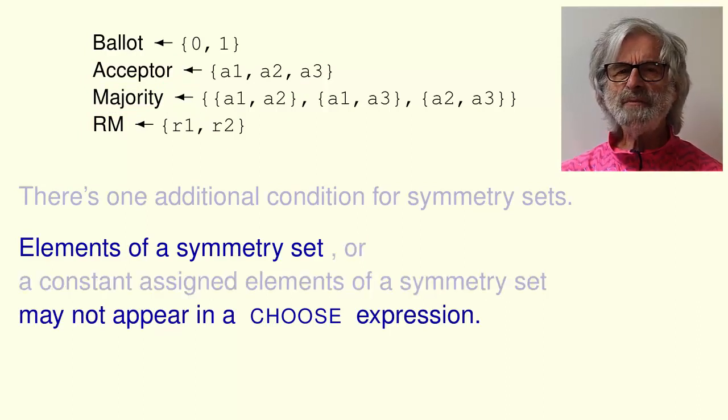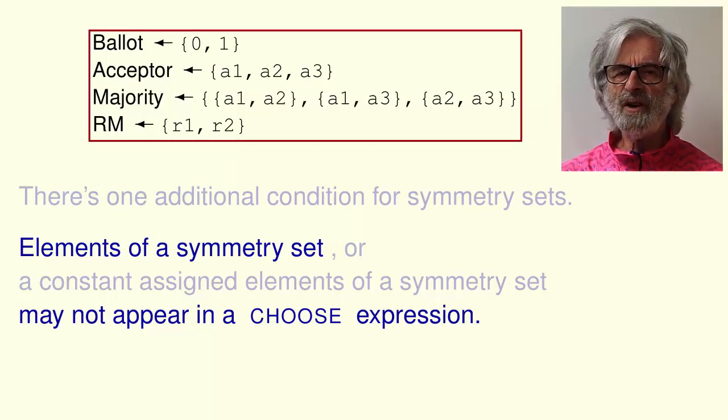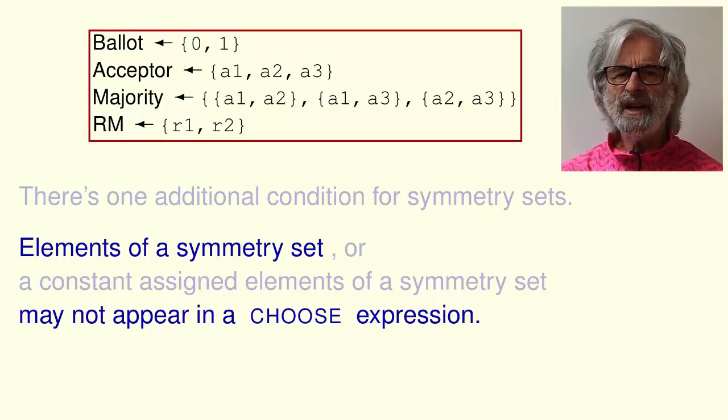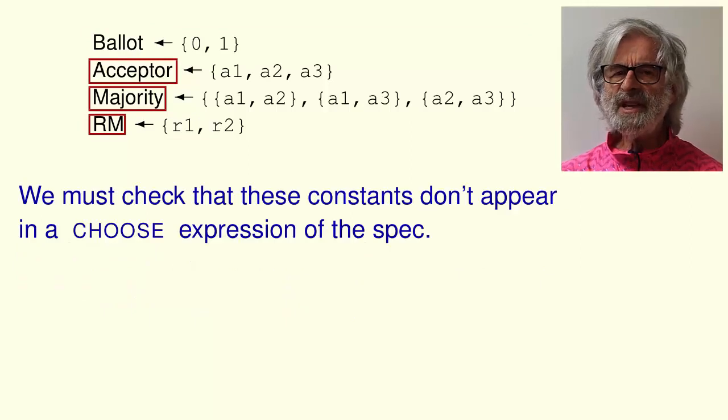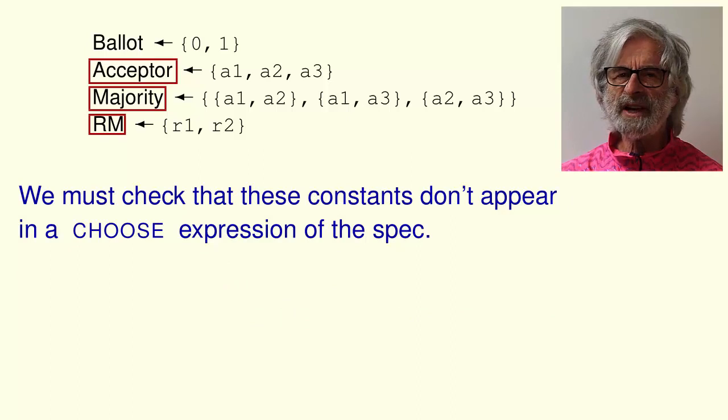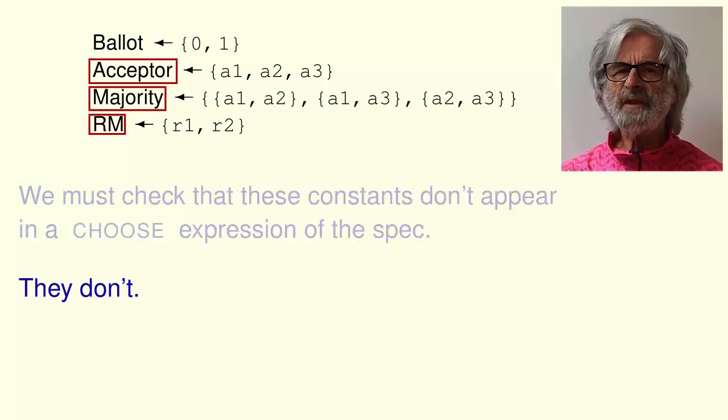In the Paxos commit spec, elements of a symmetry set don't appear in a choose because they can appear only in these assignments and there's no choose there. To verify that a constant which is assigned elements of a symmetry set doesn't appear in a choose expression, we must check that these constants don't appear in any choose expression in the spec. You can check that they don't.